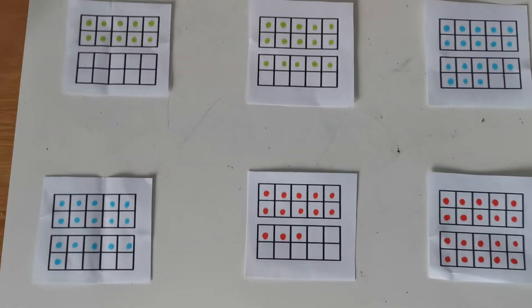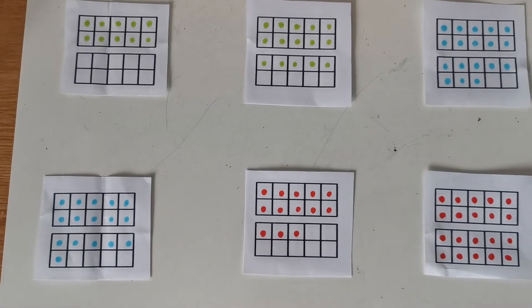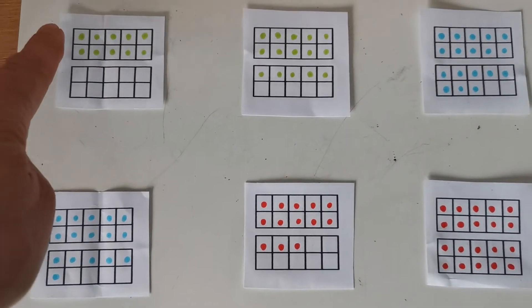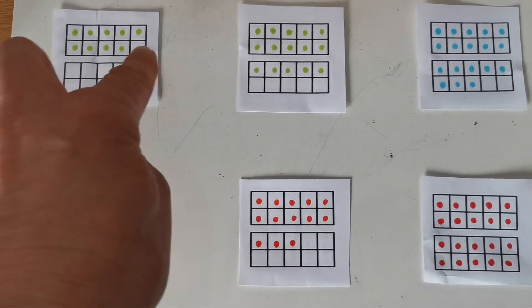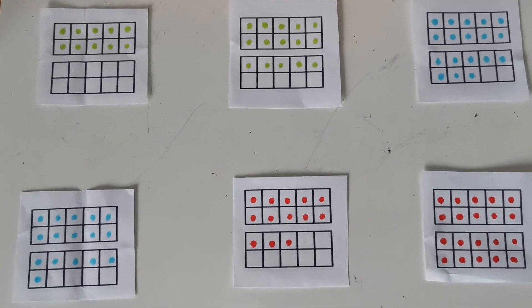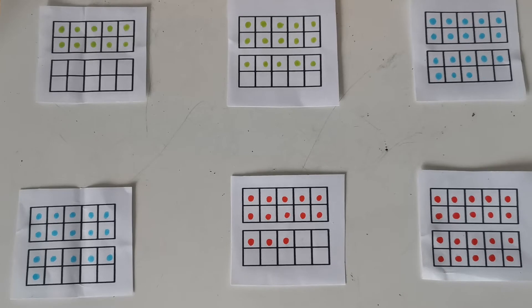So have a look now, which is the most efficient way of counting them? Remember they're tens frames, and also remember each row has five squares, so you can also practice counting your fives as well.